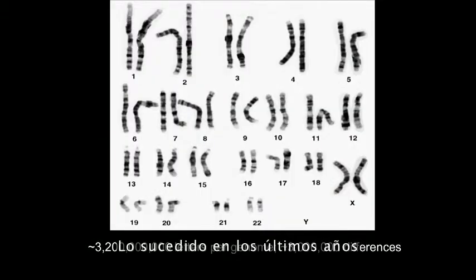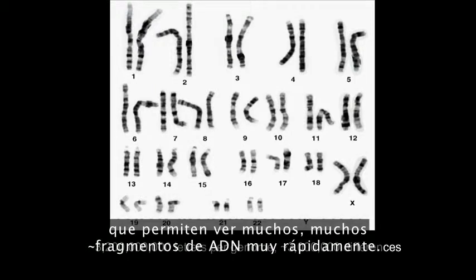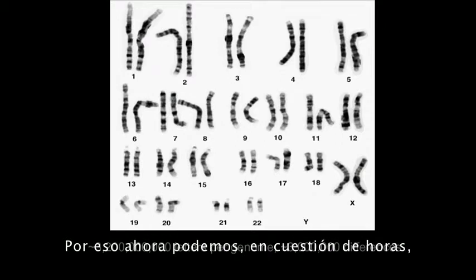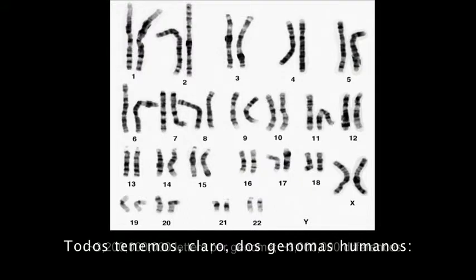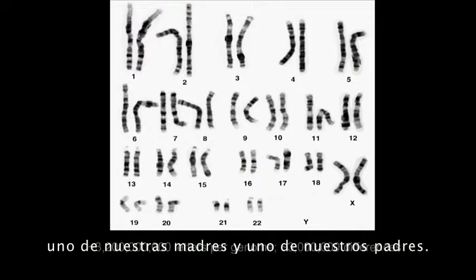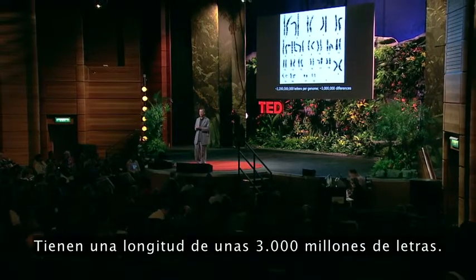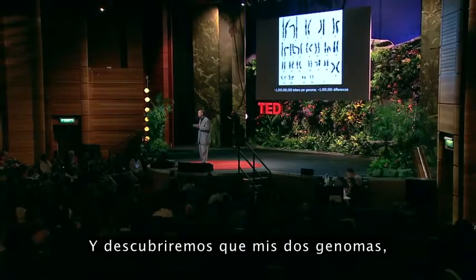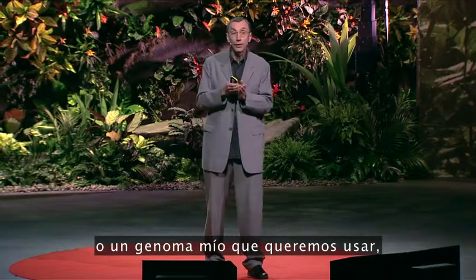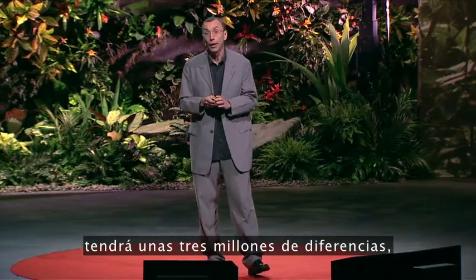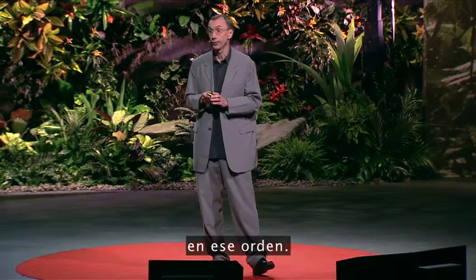What has now happened in the last few years is that there are technologies around that allow you to see many, many pieces of DNA very quickly. So we can now, in a matter of hours, determine a whole human genome. Each of us contains two human genomes, one from our mothers and one from our fathers, and they are around three billion letters long. We find that the two genomes in me, or one genome of mine with one of yours, will have about three million differences.